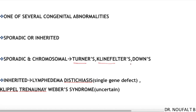Examples of sporadic syndromic primary lymphedema include Turner syndrome, Klinefelter syndrome, and Down syndrome — lymphedema is one of the several manifestations. Examples of inherited syndromic primary lymphedema include lymphedema-distichiasis, where there is a single gene defect, and Klippel-Trénaunay-Weber syndrome, where the gene defect is uncertain — both can be inherited by progeny.